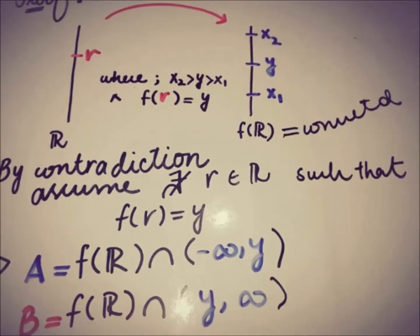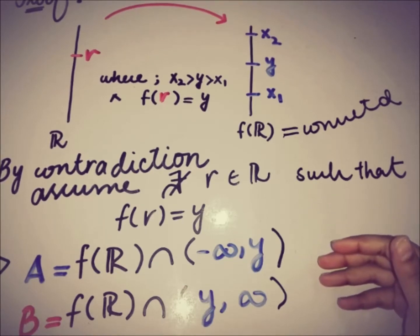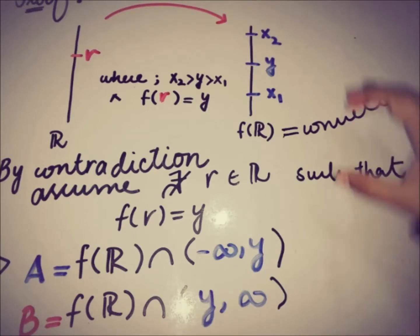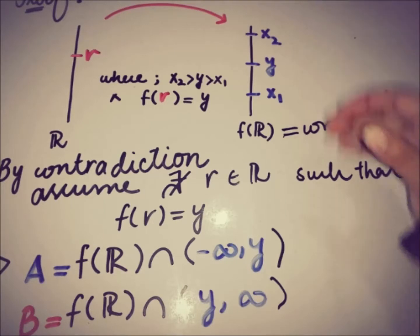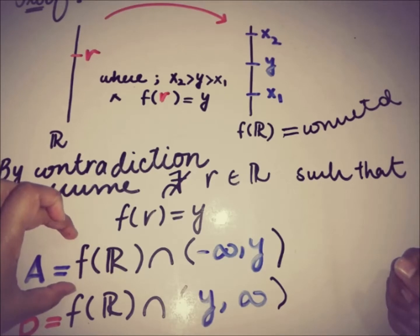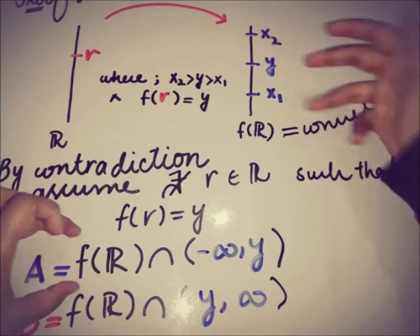We write: A = f(ℝ) ∩ (−∞, y) and B = f(ℝ) ∩ (y, +∞). We take the intersection with f(ℝ) because we are specifically dealing with the images of ℝ. Since f goes from ℝ to ℝ, we restrict to the images, giving us two open subsets A and B of f(ℝ).